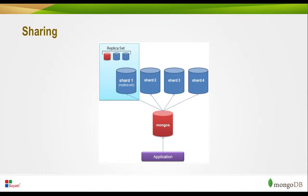MongoDB uses sharding to support deployments with very large data sets and high-throughput operations. Sharding provides horizontal scaling by dividing the data set and distributing it over multiple servers. Each shard is an independent database, and collectively the shards make up a single logical database. Sharding reduces the number of operations each shard handles and the amount of data each server needs to store. To shard a collection, you need to select a shard key — either an indexed field or an indexed compound field that exists in every document in a collection.